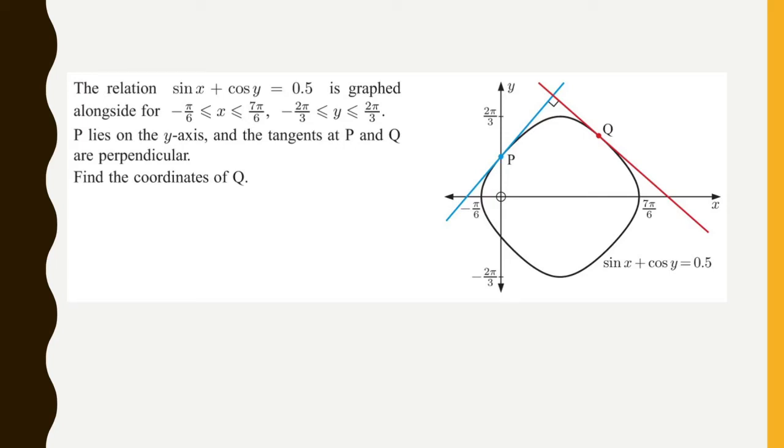So given this relation, sine of x plus cosine of y equals one-half, we're given two tangent lines, line blue, line red, and we want to find the coordinates of point Q.